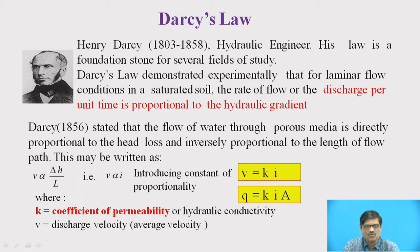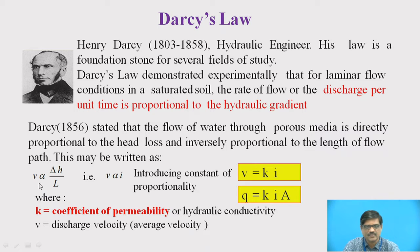Darcy stated that the flow of water through porous media is directly proportional to the head loss and inversely proportional to the length of flow. It is quite obvious that if you have more length of flow, then the flow of water will take more time. This equation is referred to as Darcy's equation: V is directly proportional to delta H upon L, that is, V is directly proportional to I, where I is the hydraulic gradient. To remove the constant of proportionality, we introduce a constant, and therefore this equation can be written as V equal to K into I.